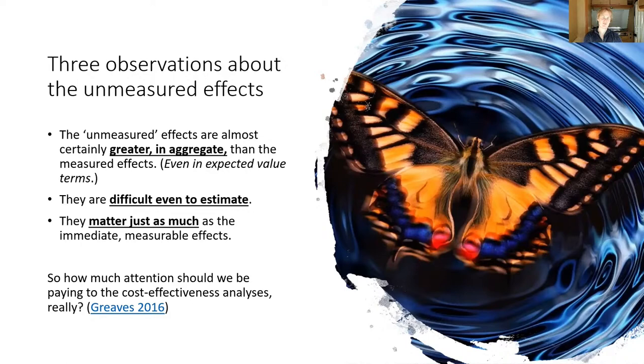The second observation is that these further future causally downstream or otherwise the further future events are much harder to estimate. In fact, they're really hard to estimate. They're much harder to estimate anyway than the near-term effects. That's because, for example, you can't do a randomized controlled trial to ascertain what the effect of your intervention is going to be in a hundred years. You don't have that long to wait. The third observation is that even these further future and relatively unforeseeable effects in principle matter from an altruistic point of view just as much as the near-term effects. The mere fact that they're remote in time shouldn't mean that we don't care about them.